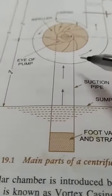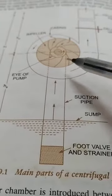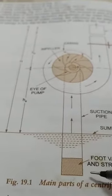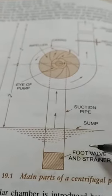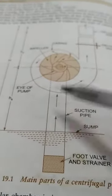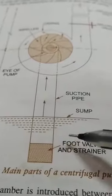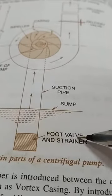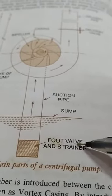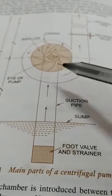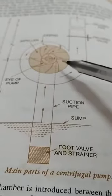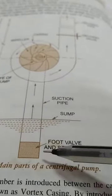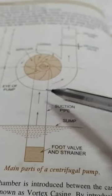The third part is the suction pipe. This is the pipe connected from the inlet of the pump down to the sump — the underground tank. That pipe is called the suction pipe. The suction pipe has a foot valve and a strainer. The foot valve is also called a non-return valve. Once you stop the pump, the water in the suction pipe should not come back to the sump; it should remain in the impeller and suction pipe.